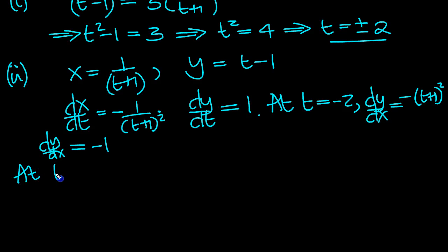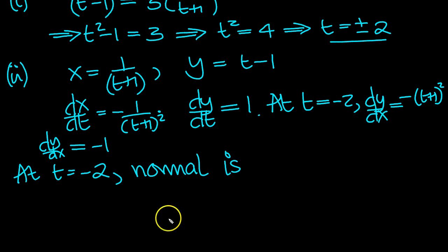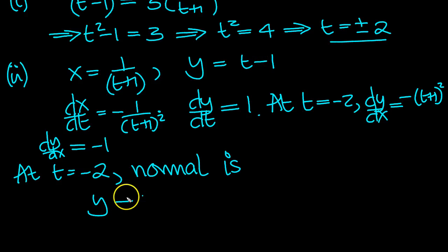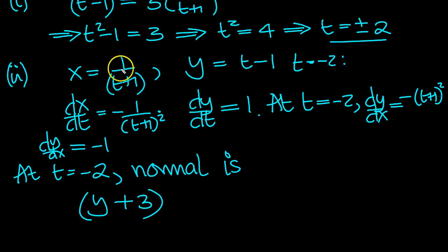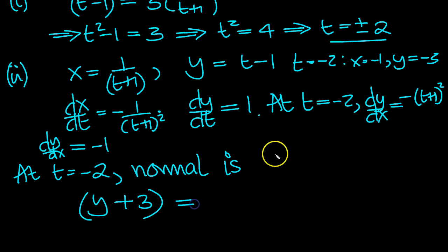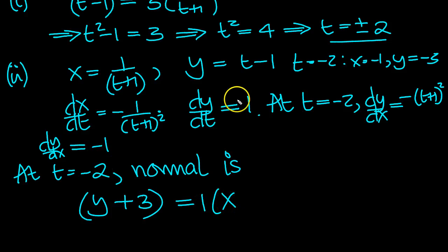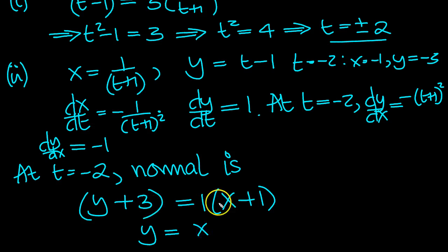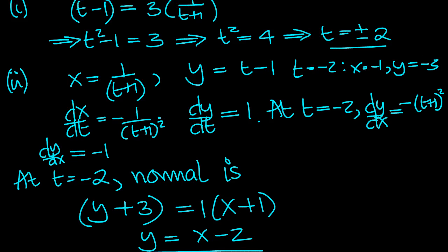The equation of the normal at t equals minus 2: when t equals minus 2, x equals 1 over minus 2 plus 1, which is minus 1. And y equals minus 2 minus 1, which is minus 3. So y minus minus 3 equals the gradient of the normal, which is 1, times x minus minus 1. This gives y equals x plus 1 minus 3, so y equals x minus 2.